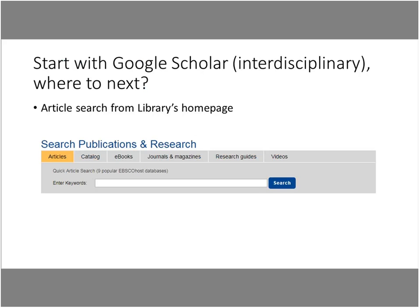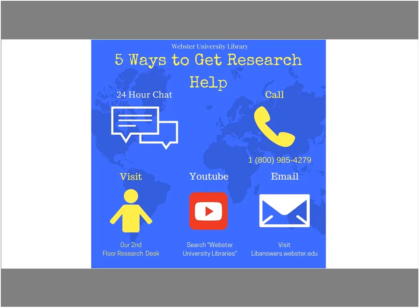If you've done some Google Scholar searching and found some good material but need a little more, you can also use the library's databases to find articles. From the main library home page, make sure the big search box is on the Articles tab, enter your topic, and click Search. It will have you log in with your last name and your Webster ID number, and then it will find you some articles.